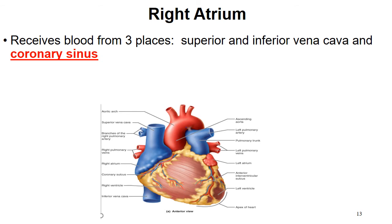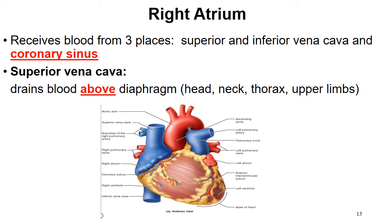The right atrium receives blood from three places: the superior vena cava, the inferior vena cava, and the coronary sinus. The superior vena cava is a large vein that drains blood from above the diaphragm — your head, neck, thorax, and upper limbs. This blood is oxygen poor and carbon dioxide rich. The inferior vena cava — inferior means below — drains blood from below the diaphragm: the abdominopelvic cavity and lower limbs.